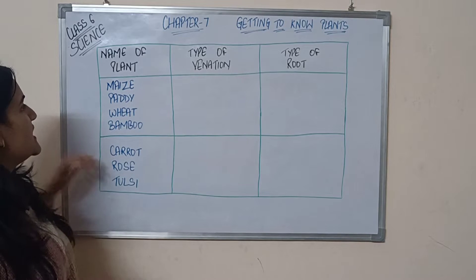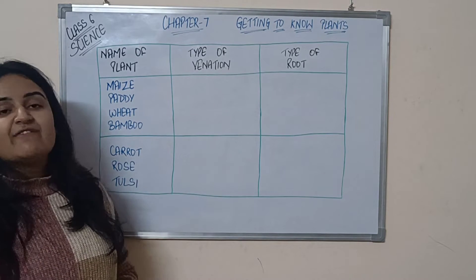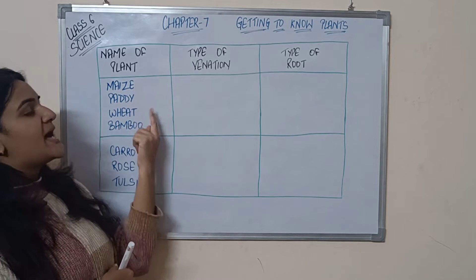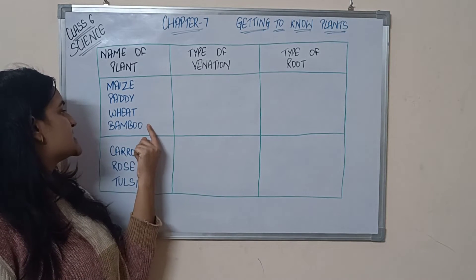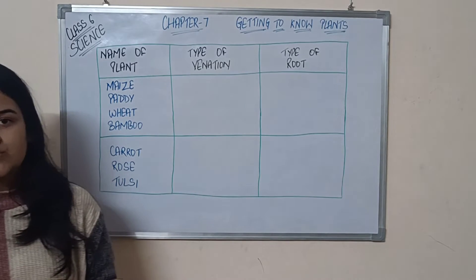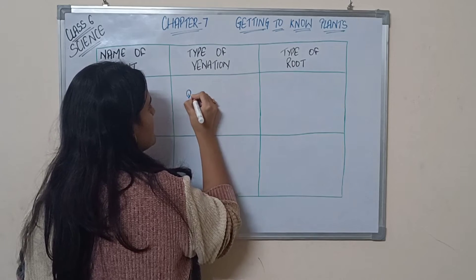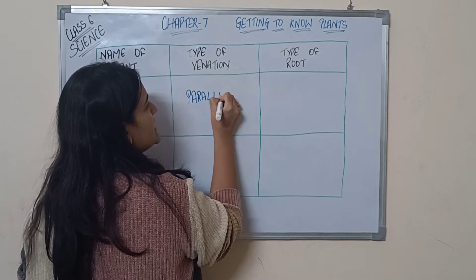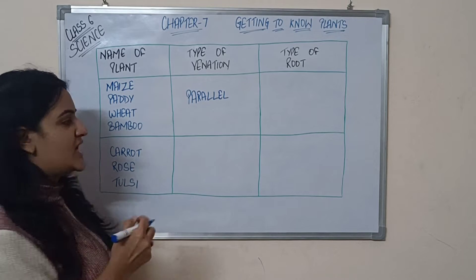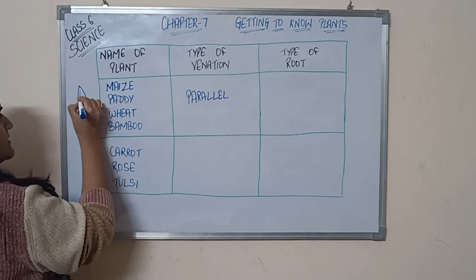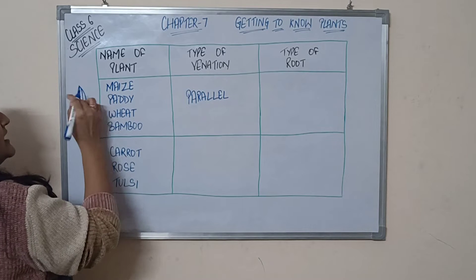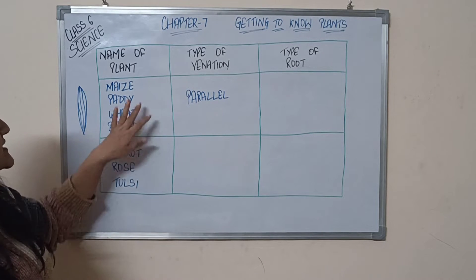First of all, we are going to talk about maize, paddy, wheat, and bamboo. Have you seen any of these plants — maize (makkai/corn), paddy (rice), wheat, and bamboo? What kind of venation do these plants have? Parallel venation — that means the veins in the leaves are running this way, not overlapping each other.